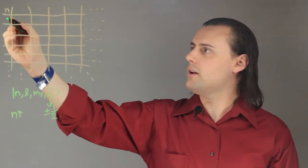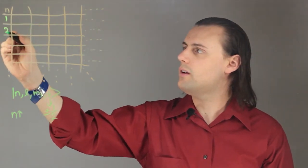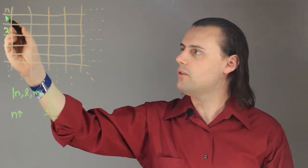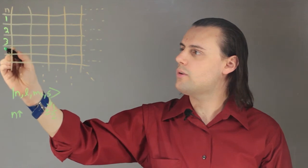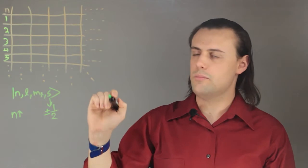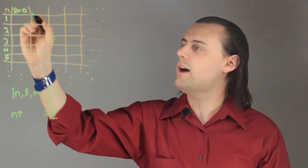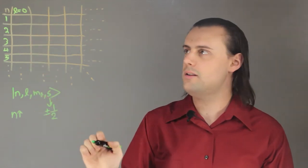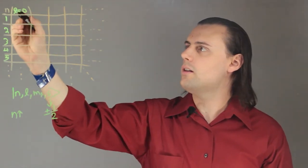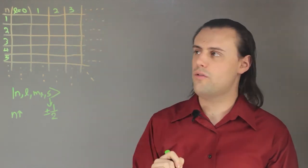So what I'm going to do is for each row, I'm going to write down the energy level. So we have one, two, three, four, five, so on and so forth. And in the different columns, we can write down the different values of the angular momentum quantum number. So l can be equal to zero, one, two, three, so on and so forth.